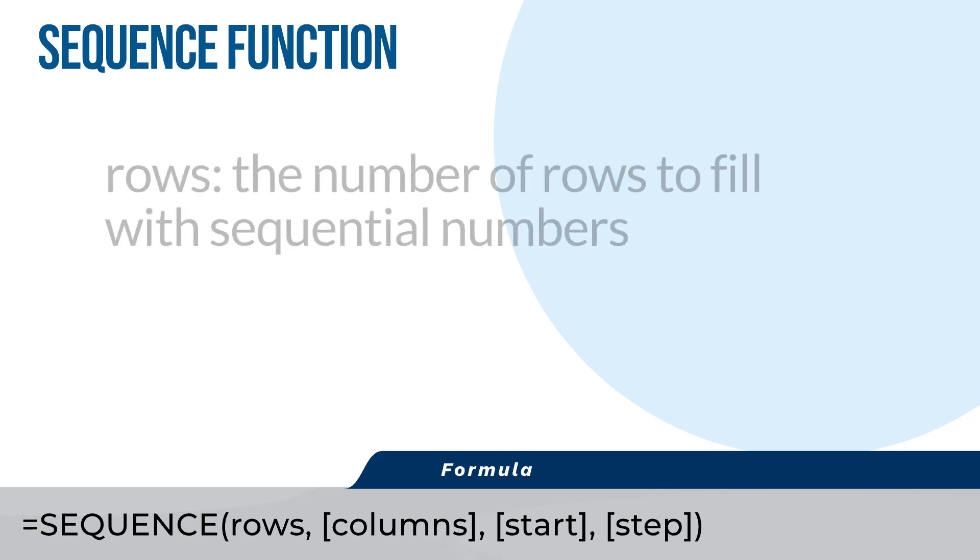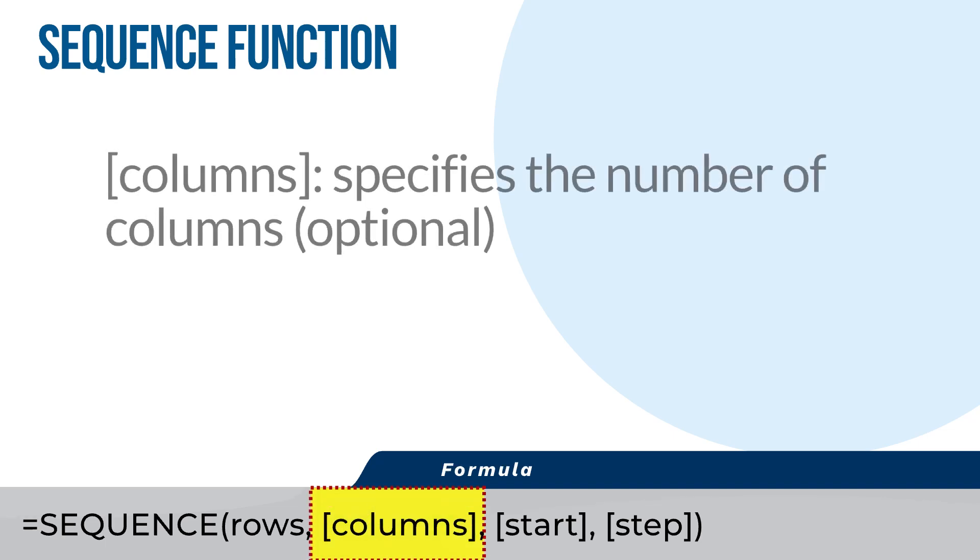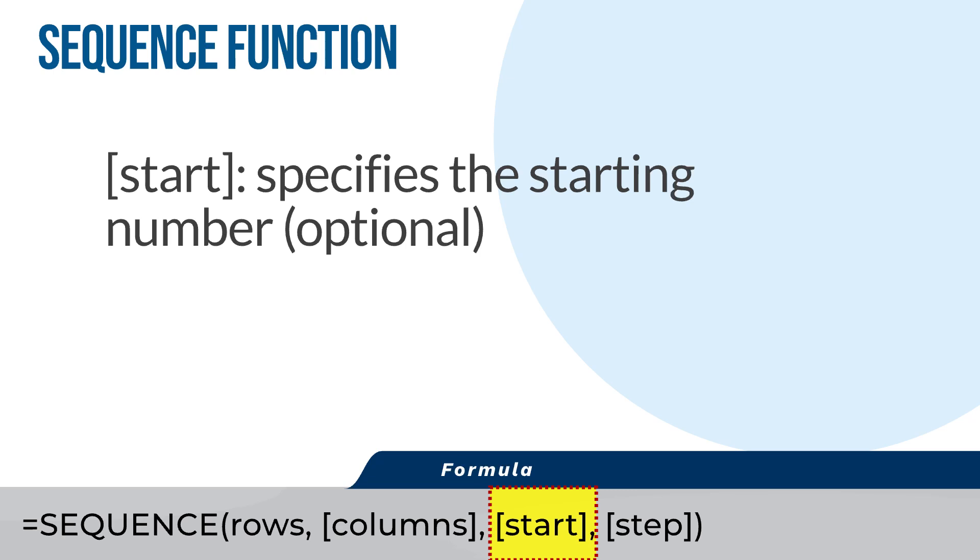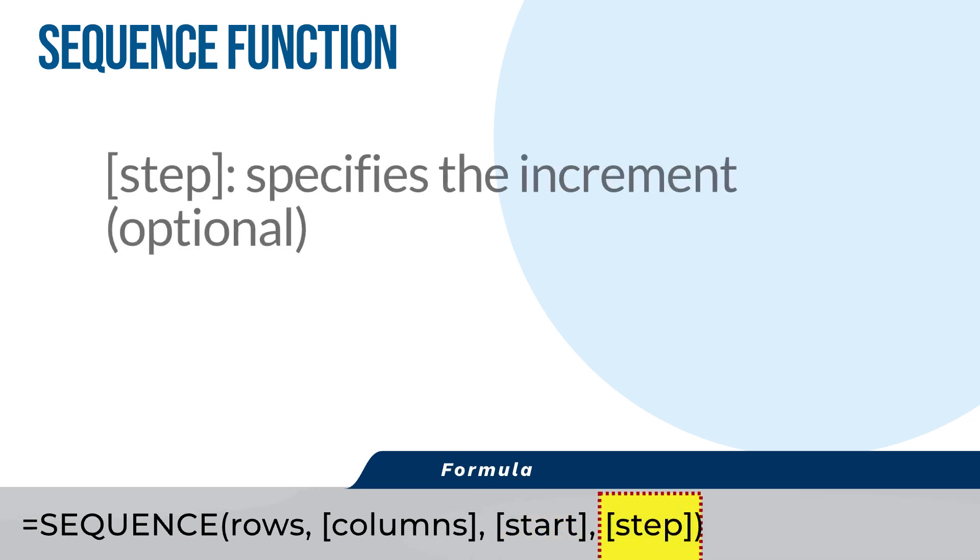The rows argument is the number of rows to fill with sequential numbers. The columns argument is optional and specifies the number of columns. The start argument is optional and specifies the starting number. The step argument is optional and specifies the increment.